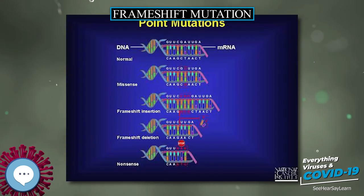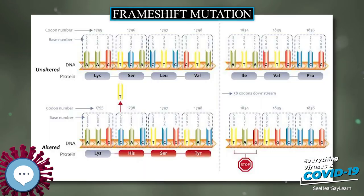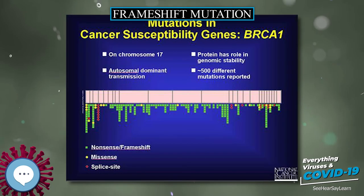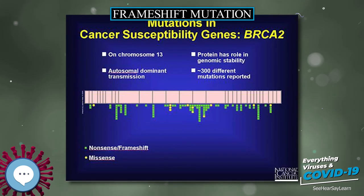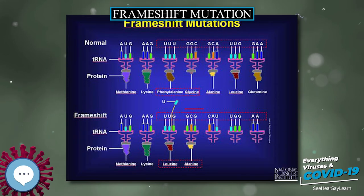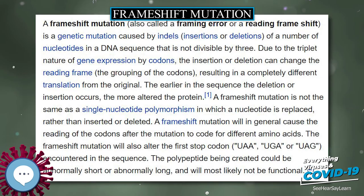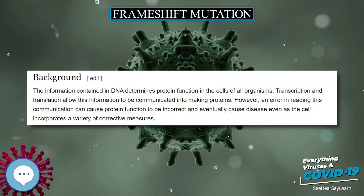Sanger sequencing and pyrosequencing are two methods used to detect frameshift mutations; however, data generated may not be of the highest quality. Even still, 1.96 million indels have been identified through Sanger sequencing that do not overlap with other databases. When a frameshift mutation is observed, it is compared against the Human Gene Mutation Database (HGMD) to determine if the mutation has a damaging effect.